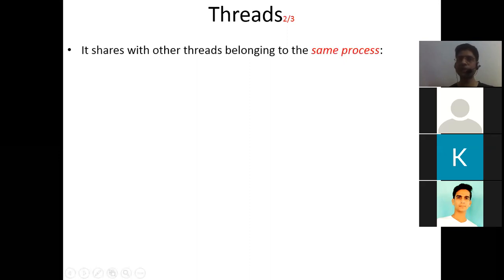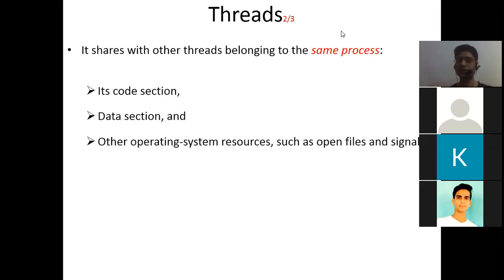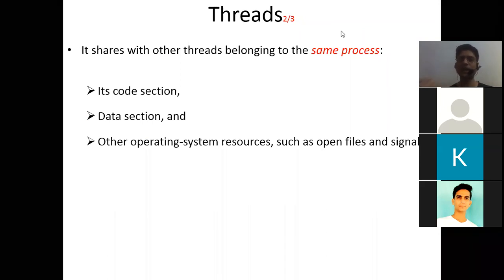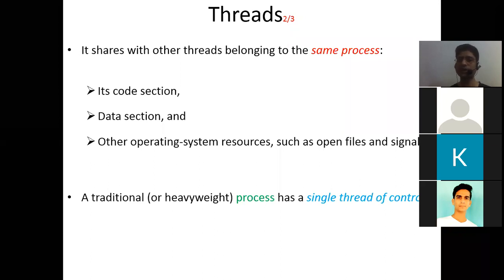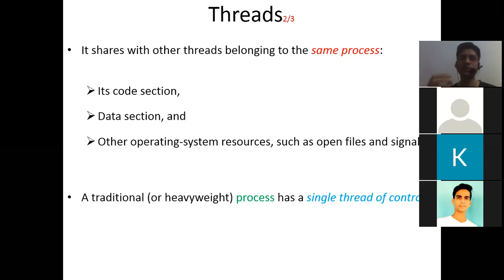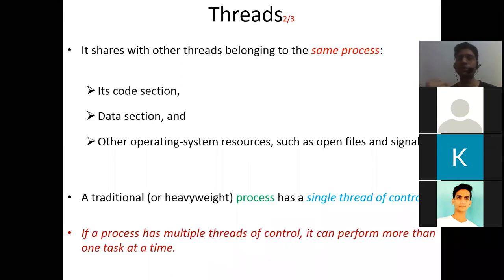A thread shares with other threads belonging to the same process: its code section, data section, and other operating system resources — such as an open file pointer, which can be shared by all threads in that process family. Other signals are also shared. A traditional or heavyweight process has a single thread of control — it does only one single task single-handedly. But if a process has multiple threads of control, it can perform more than one task at a time, just like the resume writing example.